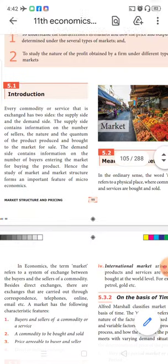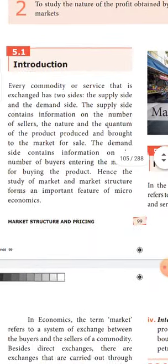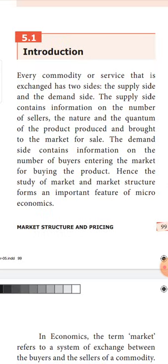For any commodity or service, you can see two sides of exchange. One is the demand side, which is seen from the point of view of the customer, and the other is the supply side, which is from the purview of the supplier. The supply side gives us information on the number of sellers available in the market, the nature of the product being supplied, and the quantity of commodity produced and brought into the market for sale. All these will decide the price of the commodity.